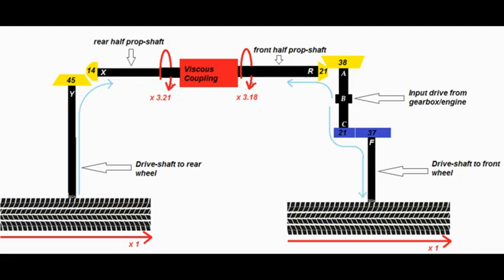When the two halves of the transmission are looked at together, it can be seen that either side of the viscous coupling, the two half prop shafts are turning at different speeds while the wheels turn at the same speed. This difference is in fact 0.8%.